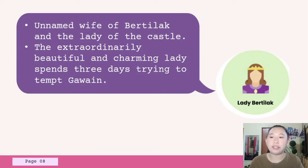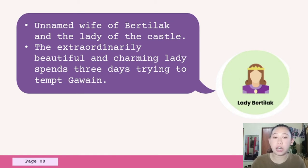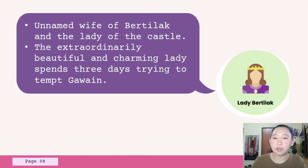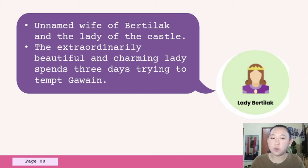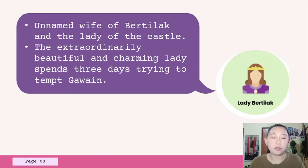Our next character is the Lady of the Castle. She is the unnamed wife of Bertilak. The extraordinarily beautiful and charming lady spends three days trying to tempt Gawain. She is Bertilak's wife and attempts to seduce Gawain on a daily basis during his stay at the castle. Though the poem presents her as no more than a beautiful young woman, Bertilak's wife is an amazingly clever debater and astute reader of Gawain's responses as she argues her way through three attempted seductions.